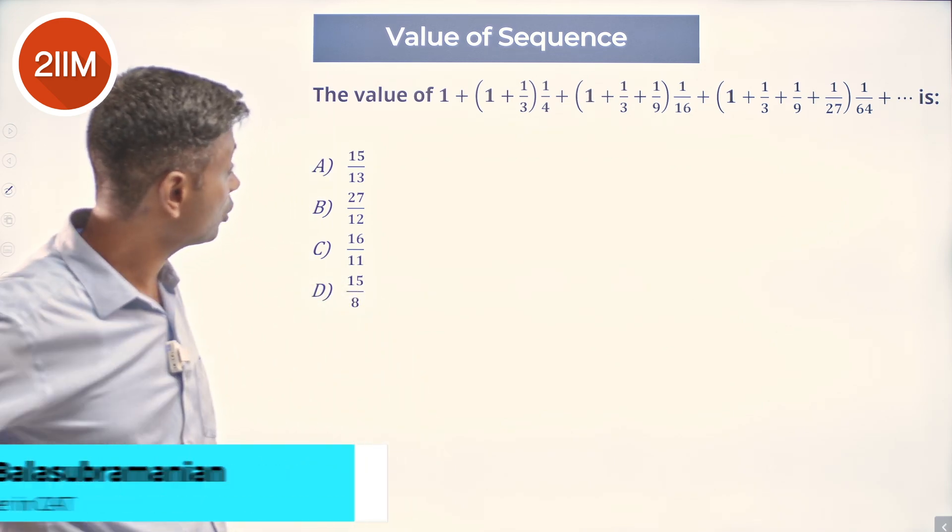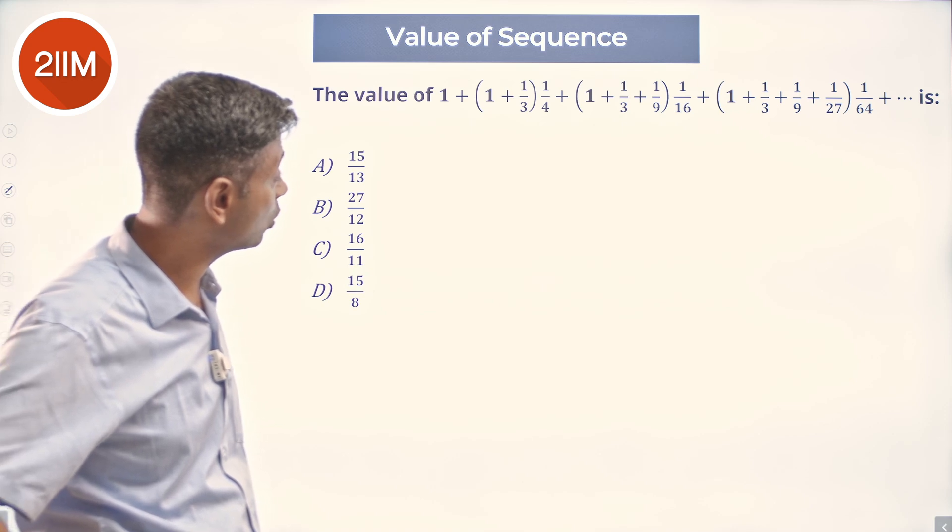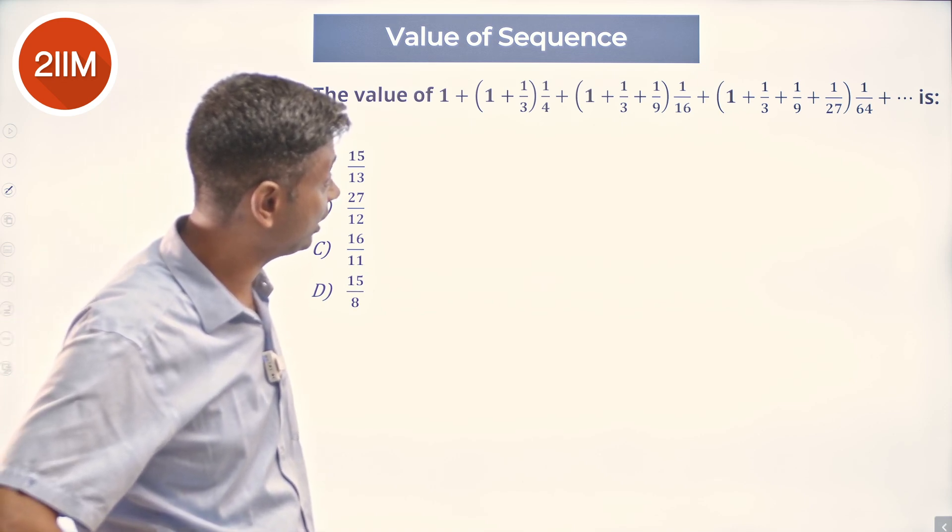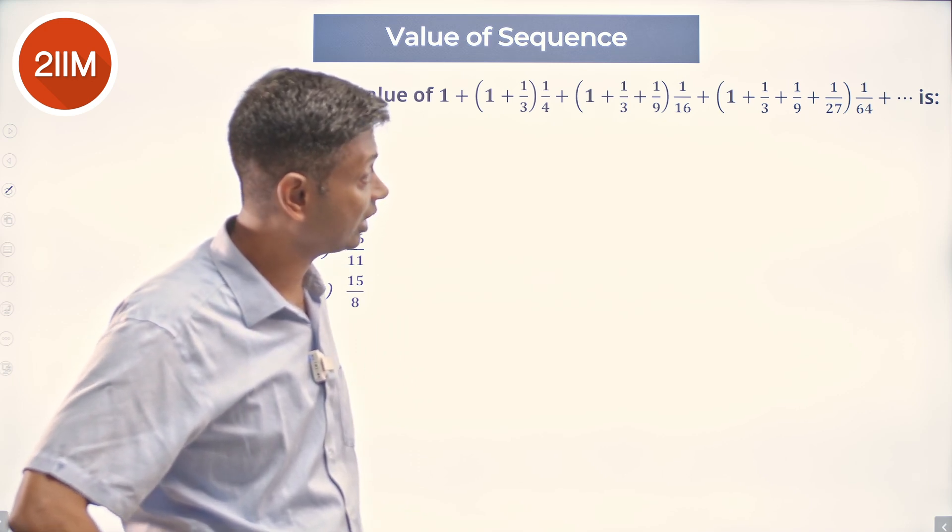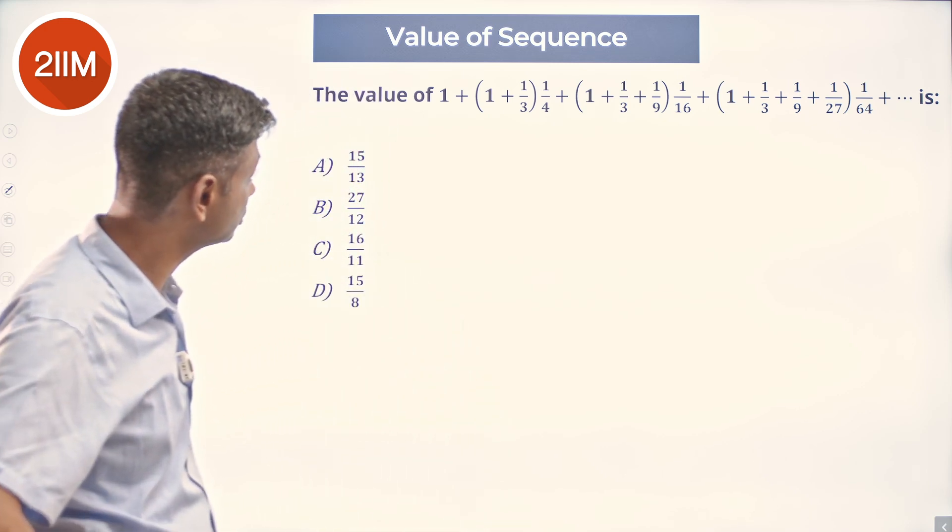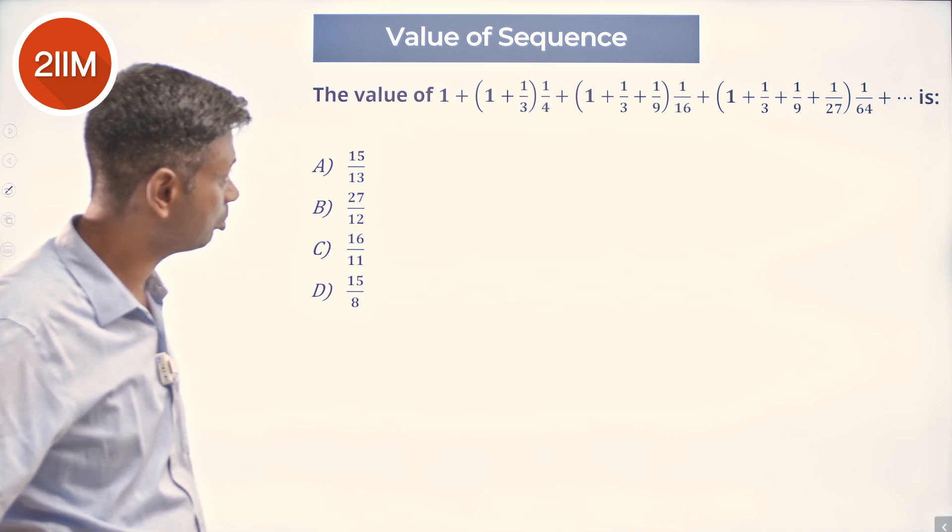The value of 1 plus (1 plus 1/3) times 1/4 plus (1 plus 1/3 plus 1/9) times 1/16 plus (1 plus 1/3 plus 1/9 plus 1/27) times 1/64 and so on is a tough one and a proper pain in the neck.